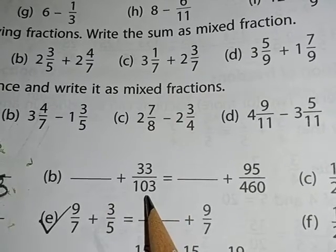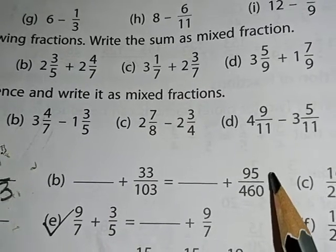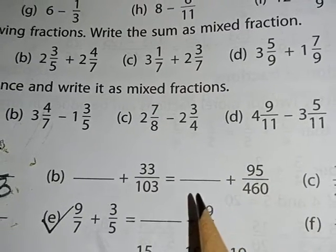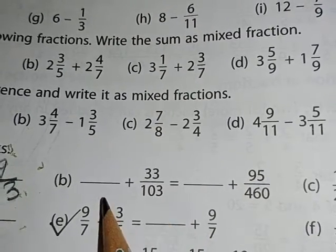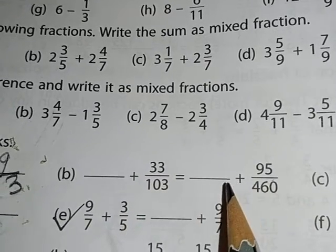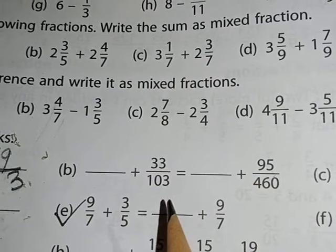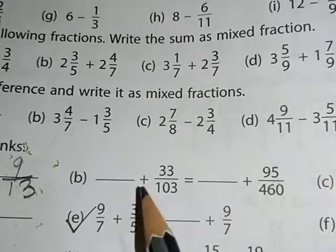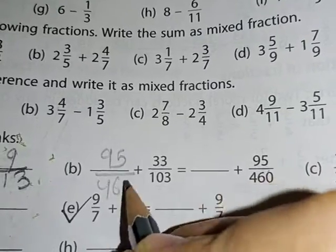After equal to 95 upon 460. Now if you see, you have to make this side also equal and this side means both the sides equal to each other. For making both the sides equal to each other, what do we do? The number which is missing here, that is 95 upon 460, we will write here.